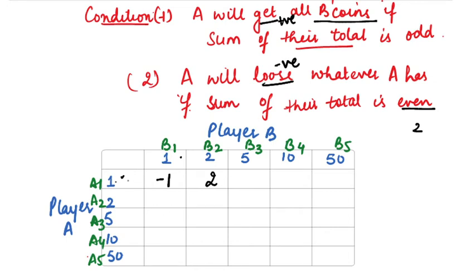Next A1, B5 total is 6, even. So it means A will lose whatever A is having. A is having 1, so A will lose 1. 10 plus 1, 11. 11 is odd. Odd means A will gain, will get all the coins which B is having. So it means B is having 10, A will gain 10. A1, A first is 1 and 50, 51 again odd. So A will get what B has. B is having 50, so A will be getting 50.